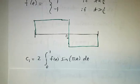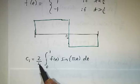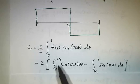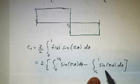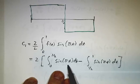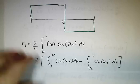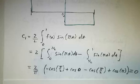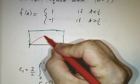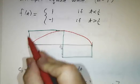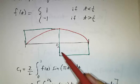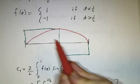Let's find the first coefficient c₁. We take (2/L) with L = 1, so we compute the integral from 0 to 1 of f(t) sin(πt) dt. Since f is 1 from 0 to 1/2 and −1 from 1/2 to 1, we get the integral from 0 to 1/2 of sin(πt) minus the integral from 1/2 to 1 of sin(πt). Working this out gives −cos(π/2) + cos(0) − cos(π/2) + cos(π), which all adds up to 0. This shouldn't surprise us: the inner product of the square wave with this first sine wave gives positive contributions on one half and negative on the other that exactly cancel.